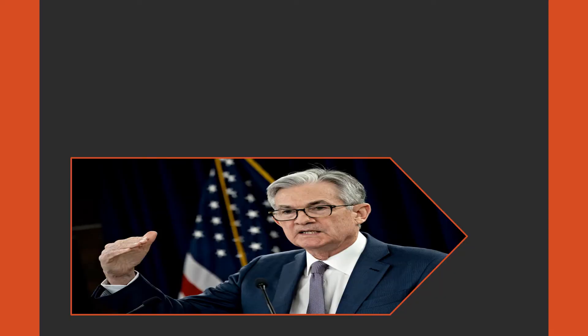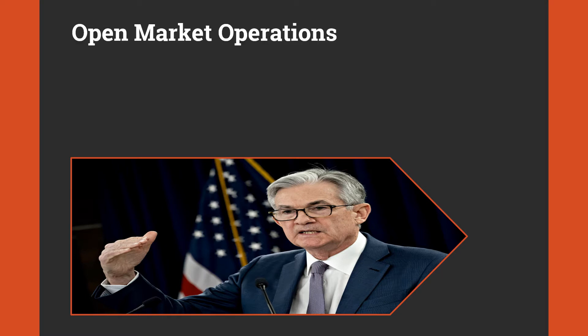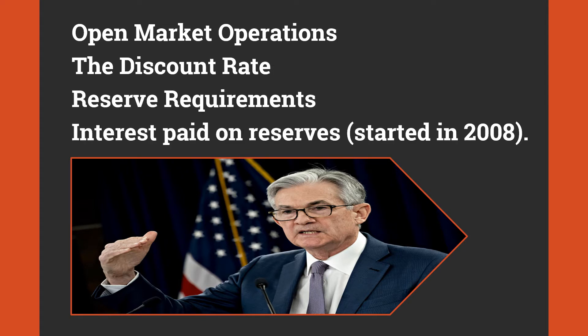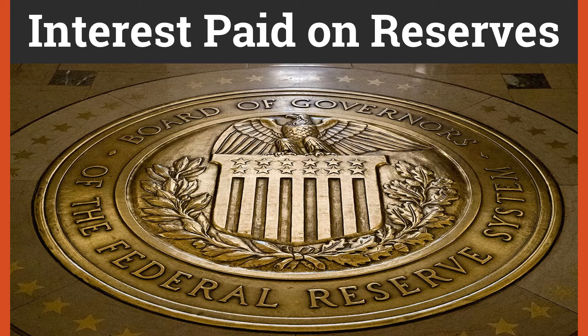When it comes to monetary policy, the United States Federal Reserve has four key tools for controlling the money supply: it can conduct open market operations, change the discount rate, alter reserve requirements, and manipulate the interest rate it pays banks for holding on to reserves. Let's look at each of these in reverse order.